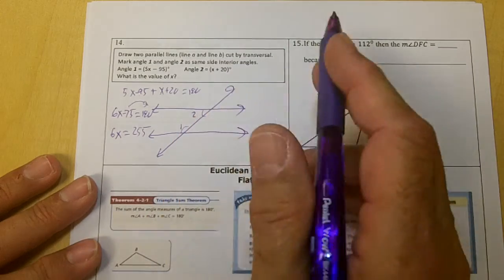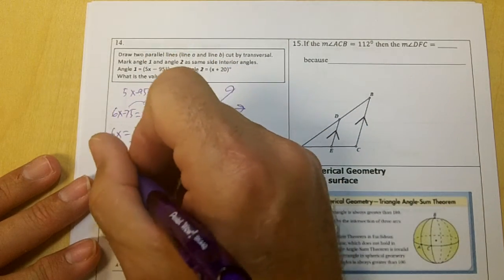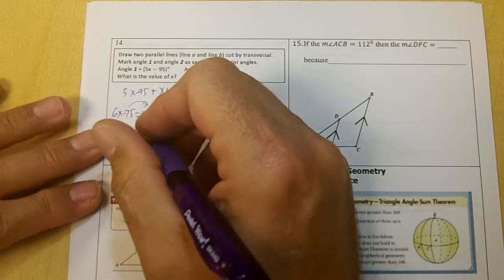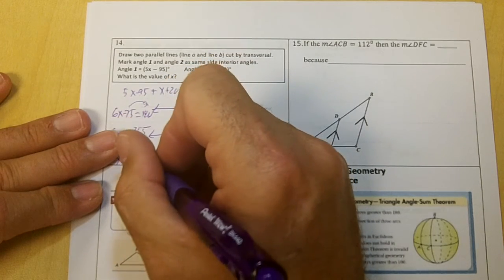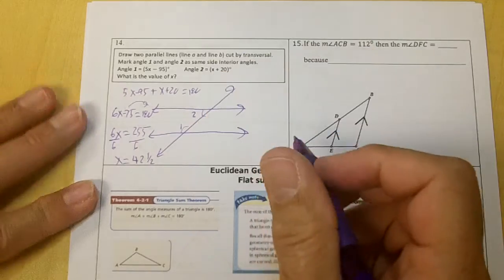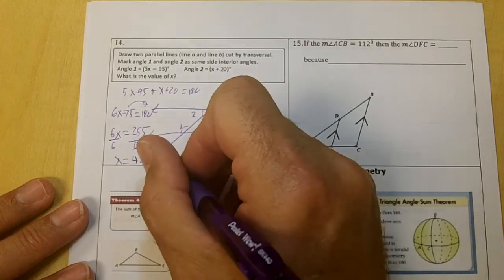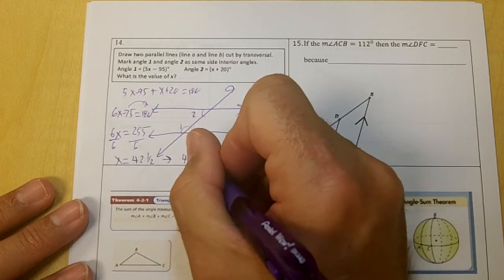And this is going to be a fraction. x equals 42 and a half, or 42.5, 42 and 5 tenths.